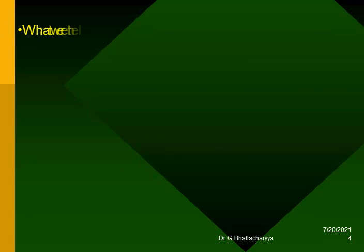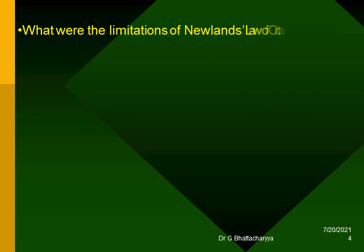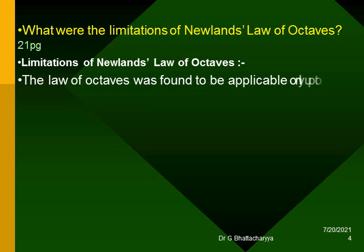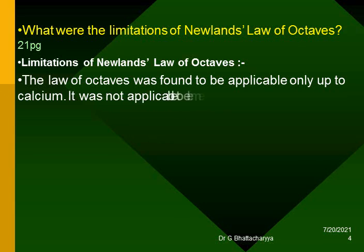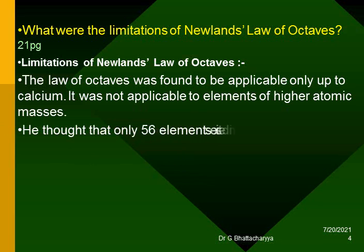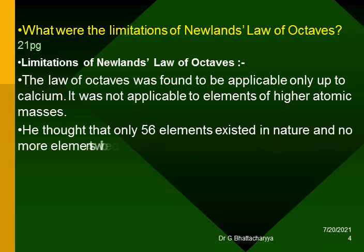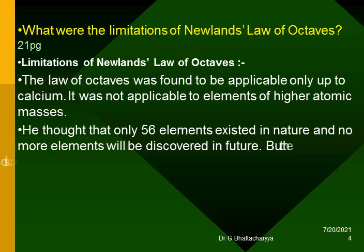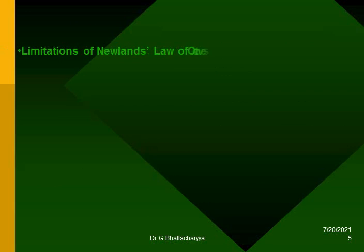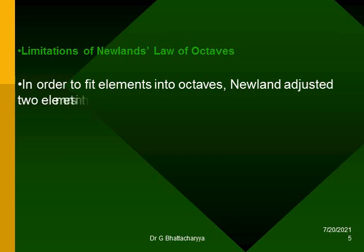What were the limitations of Newland's law of octaves? The law of octaves was found to be applicable only up to calcium; it was not applicable to elements of higher atomic masses. He thought that only 56 elements existed in nature and no more elements would be discovered in future, but newly discovered elements were not accommodated in the octaves. In order to fit elements into octaves, Newland adjusted two elements in the same slot which were not similar.